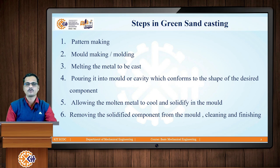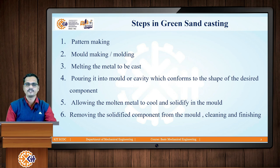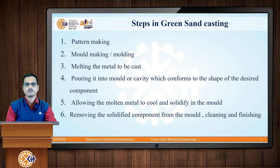Dimensions of patterns are always slightly more than the dimensions of the casting to be obtained. After preparing this pattern, we put it into a sand mould. The sand mould is prepared with the help of moulding sand which consists mainly of silica sand with 4 to 5 percent moisture and binders. By using this pattern we create cavities inside the moulding sand, and that second process is called moulding or mould making.